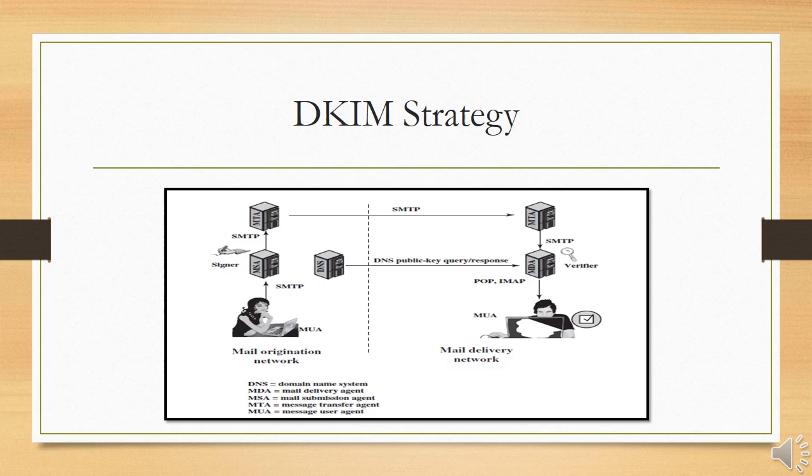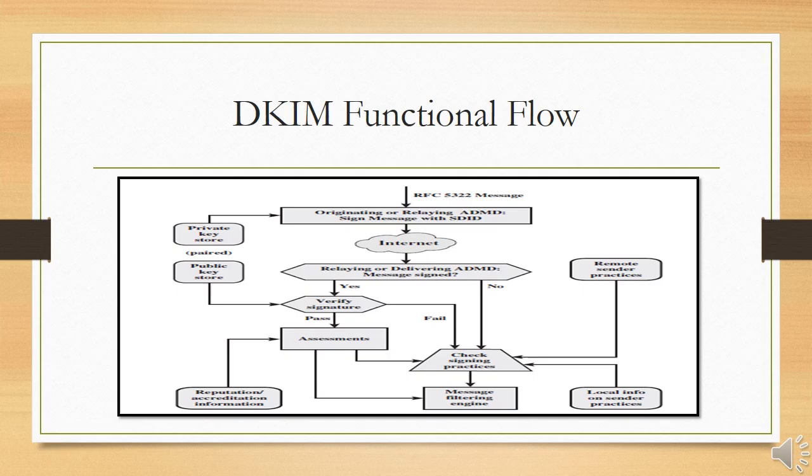At the destination, the MDA retrieves the public key from the incoming signature and verifies the signature before passing the message on to the destination email client. The default signing algorithm used is RSA with SHA-256; RSA with SHA-1 may also be used. The DKIM functional flow figure provides a more detailed look at the elements of DKIM operation.